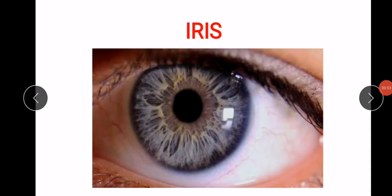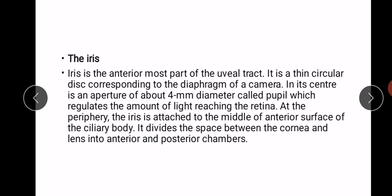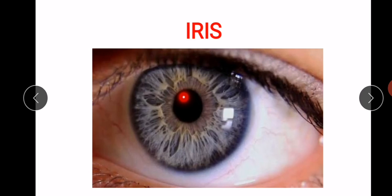Welcome to another video on my channel. In this video we will discuss the iris. The iris is the innermost part of the uveal tract and it is a thin circular disc corresponding to the diaphragm of a camera. In its center is an aperture of about four millimeters diameter called the pupil, which regulates the amount of light reaching the retina.